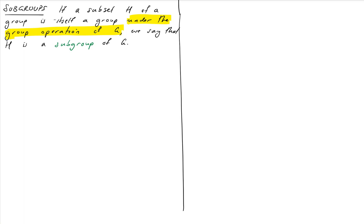And we have some notation for this. We write H is less than or equal to G. But this less than or equal is quite suggestive. It means that, for example, G is a subgroup of itself. That's allowed.